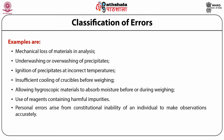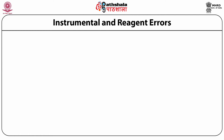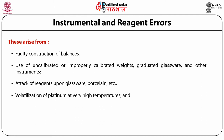Personal errors may arise from the constitutional inability of an individual to make certain observations accurately. Some persons are unable to judge color changes sharply in visual titration, which may result in a slight overstepping of the end point. Another type of errors are instrumental and reagent errors, arising from faulty construction of balances, use of uncalibrated weights, graduated glassware, attack of reagents upon glassware or porcelain, volatilization of platinum at very high temperatures, and use of reagents containing impurities.